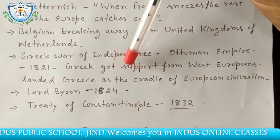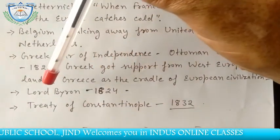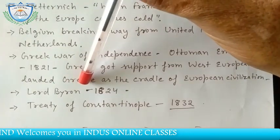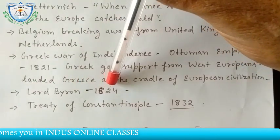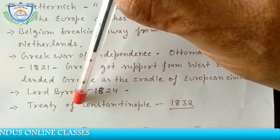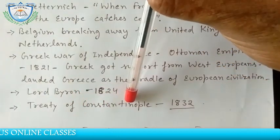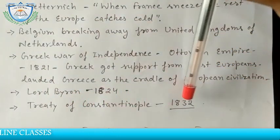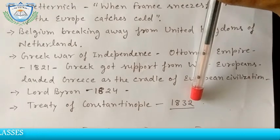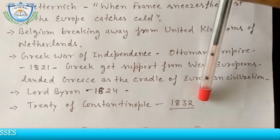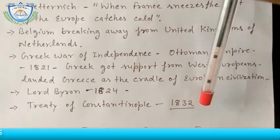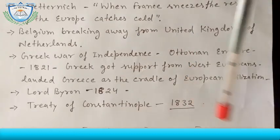In the Greek War of Independence, Lord Byron — the famous English poet — took part, and he died in 1824. Finally, in the Treaty of Constantinople in 1832, Greece was established as an independent nation and broke away from the Ottoman Empire.